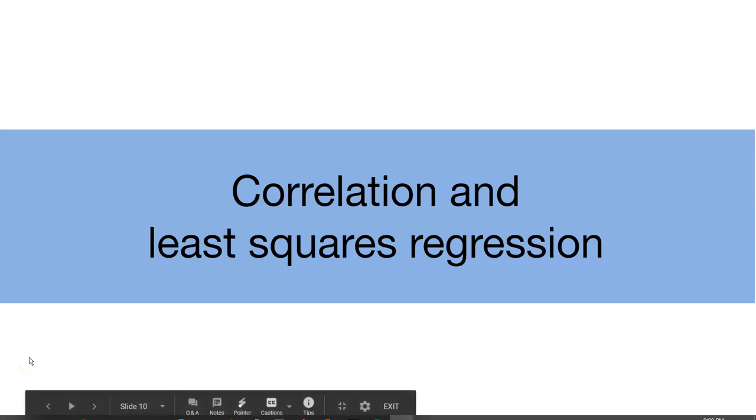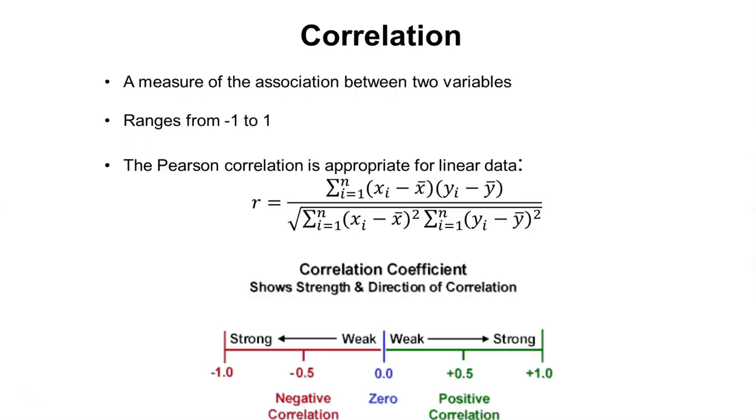This video will discuss correlation and least squares regression. Correlation can be considered the measure of association between two variables. It can range from negative 1 to 1.